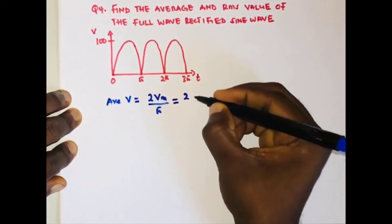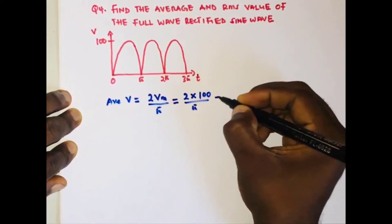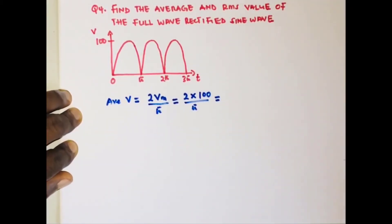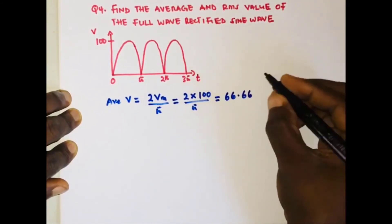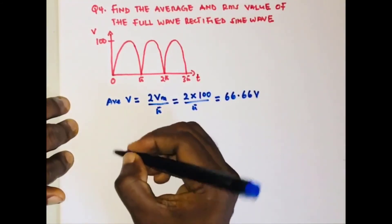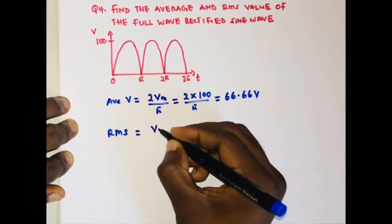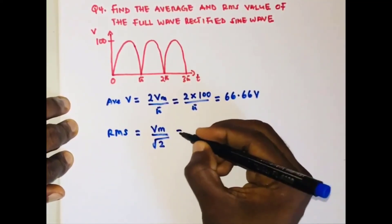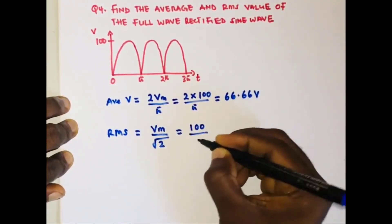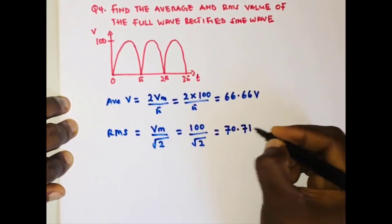With Vm equal to 100, the average value is 2 times 100 divided by π. So 2 times 100 is 200, divided by π, which equals 63.66 volts. The RMS value is the amplitude divided by the square root of 2, so that's 100 divided by √2, which is 70.71 volts.